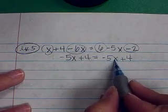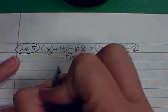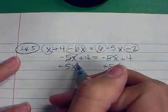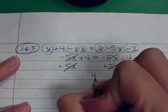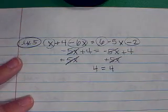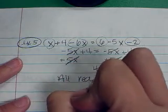I want to move my variables over. So let's move from the right to the left. I'm going to add 5x to both sides. This cancels, and then this side also cancels. And that's the special case. What happens now is that 4 equals 4. Because we know that to be true, 4 really does equal 4, the answer is all real numbers.